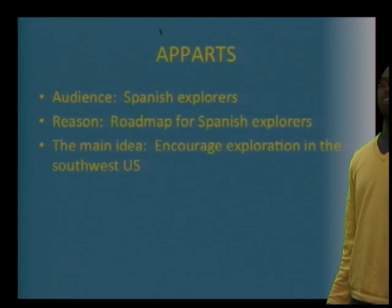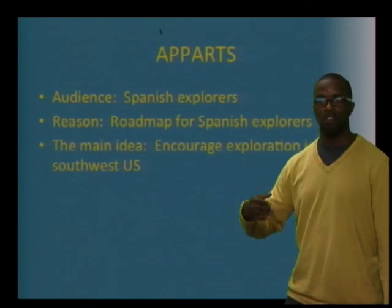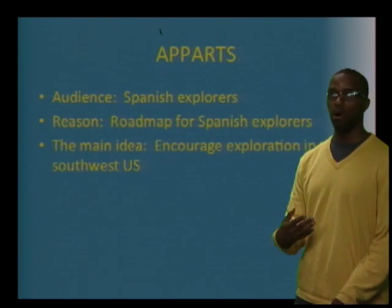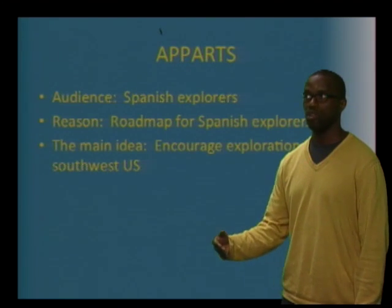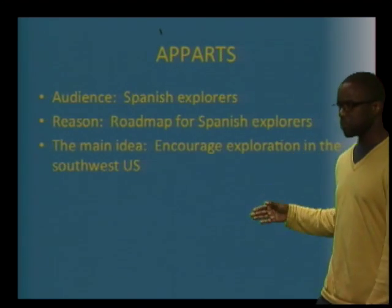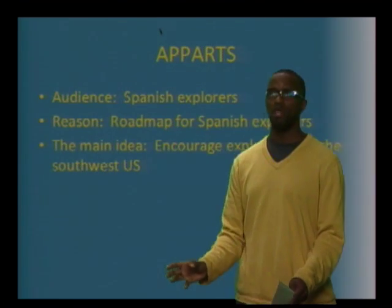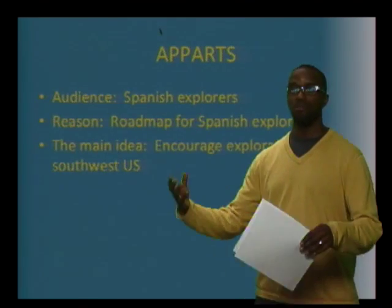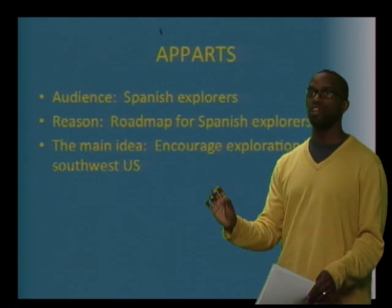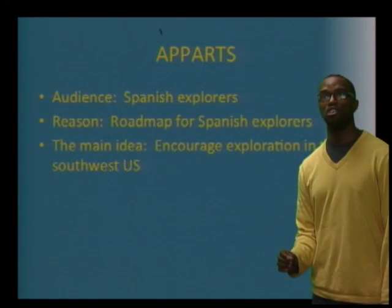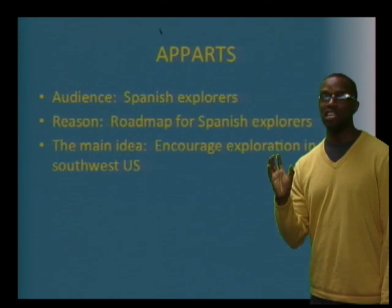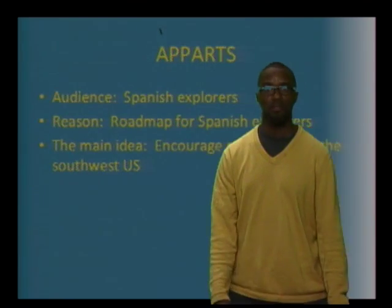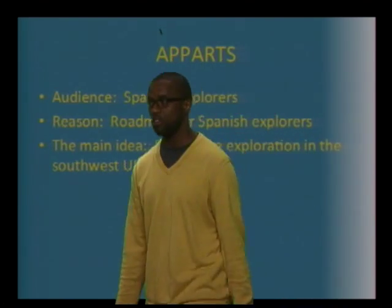T — The main idea. Continuing on this theme of exploration, the Crown wanted to encourage and promote exploration in the Southwest United States. At this time, the land was inhabited by indigenous people. The Spanish had heard about the seven beautiful cities of gold, and the Crown wanted to encourage explorers — also known as conquistadors — to travel and find this place to enrich the Spanish Crown. So the main idea is to encourage exploration.